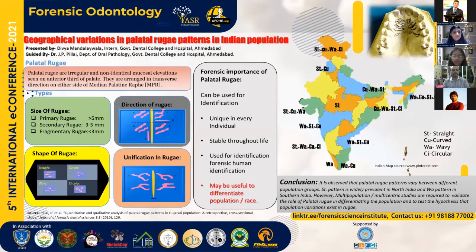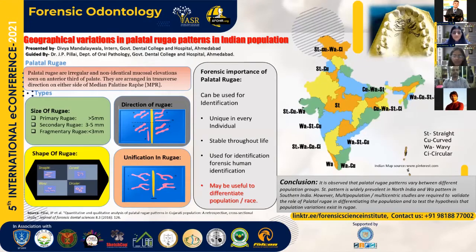India, as we all know, is a very diverse nation based on geographical areas along the dimensions of ethnicity, race, gender, and also religious beliefs. Each and every state has its own language, culture, diet, and also climatic variations. Similarly, as we move from north to south and from east to west, we find several variations in rugae patterns among different population groups. These variations are what has motivated me to present today's poster.